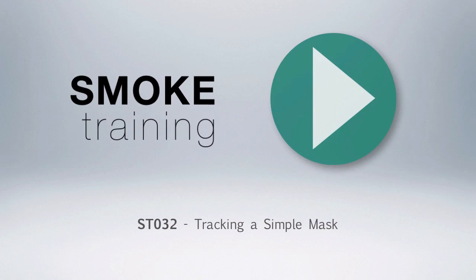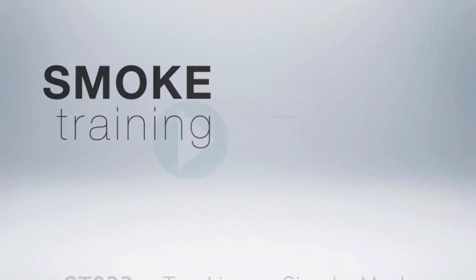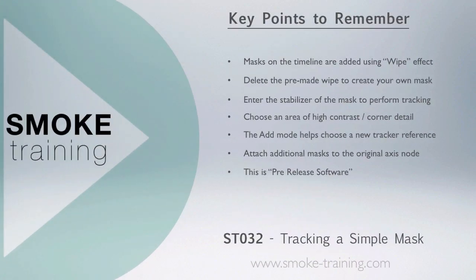That brings to a close this episode of Smoke Training. Thank you for watching. Here are some of the key points covered in this episode. To add a mask to a layer in the timeline without using Connect Effects, use the Wipe effect. A wipe effect defaults to a horizontal wipe lasting the length of your clip, so delete it first and then add a new mask. Enter the Stabilizer module of the mask to perform any tracking, making sure you choose an area of high contrast and look for corner details for more tracking success. When the point you are tracking moves off screen, stop the tracker, go back, and then add a new reference point to continue the track. If you wish to track multiple mask shapes on screen, simply connect all future masks to the original axis in the mask schematic — this will apply the same tracking data.